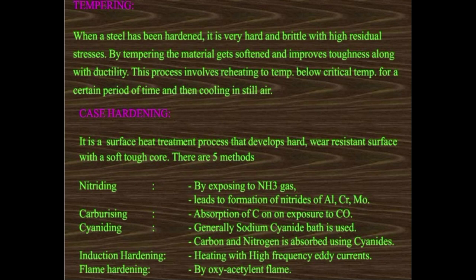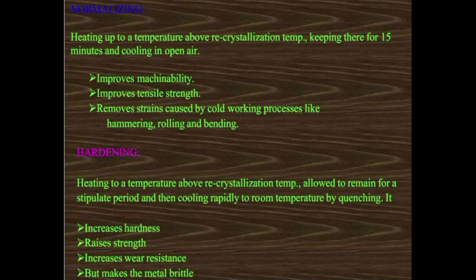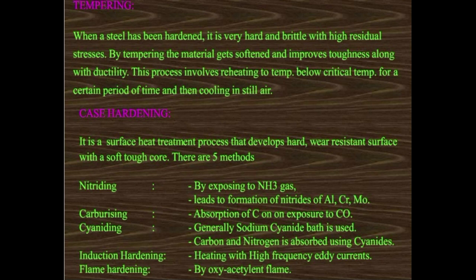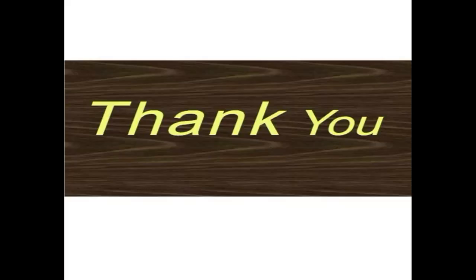Case hardening is a surface heat treatment process that creates a hard wear-resistant surface with a soft, tough core. There are five methods: nitriding, carburizing, cyaniding, induction hardening, and flame hardening. All these processes — annealing, normalizing, hardening, tempering, and case hardening — are stress relieving processes used to achieve good quality material after welding. Thank you guys, I hope you understand the stress relieving subject from beginning to end. Thank you for your patience.